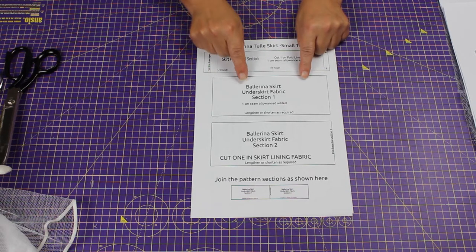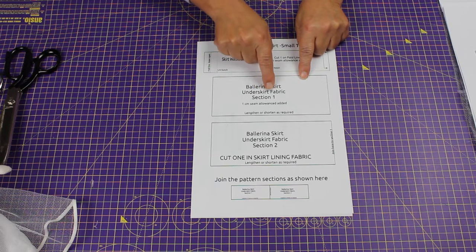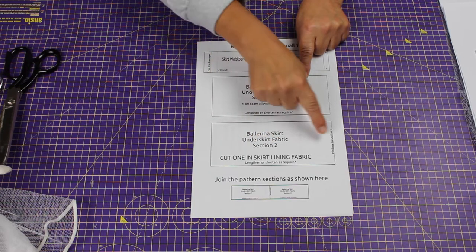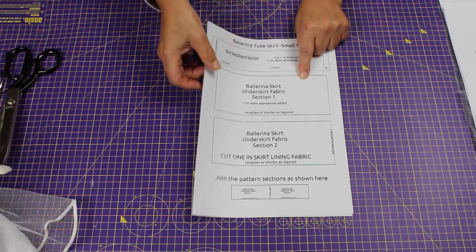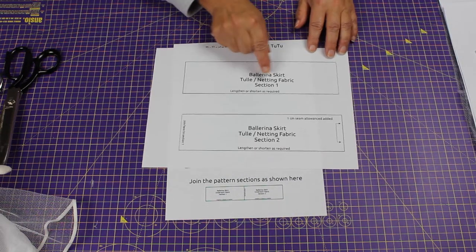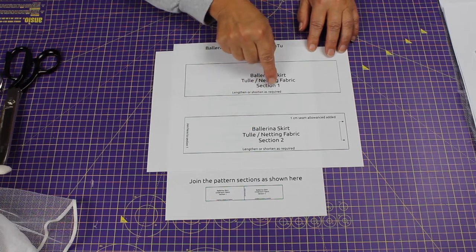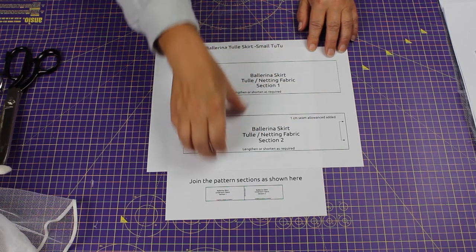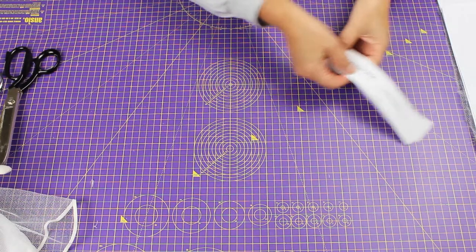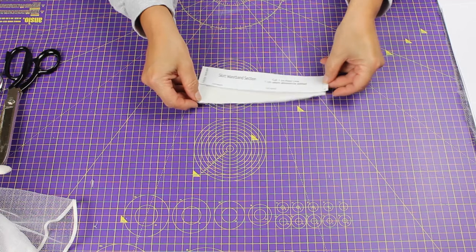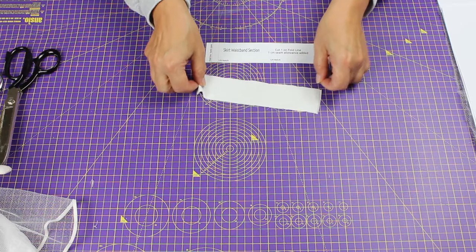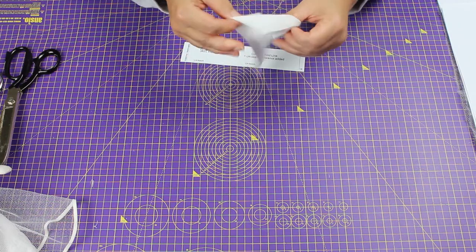You have the underskirt pattern sections one and two that need to be joined, and the netting sections one and two that also need to be joined. I've gone ahead and cut the waistband in plain cotton fabric on the fold.